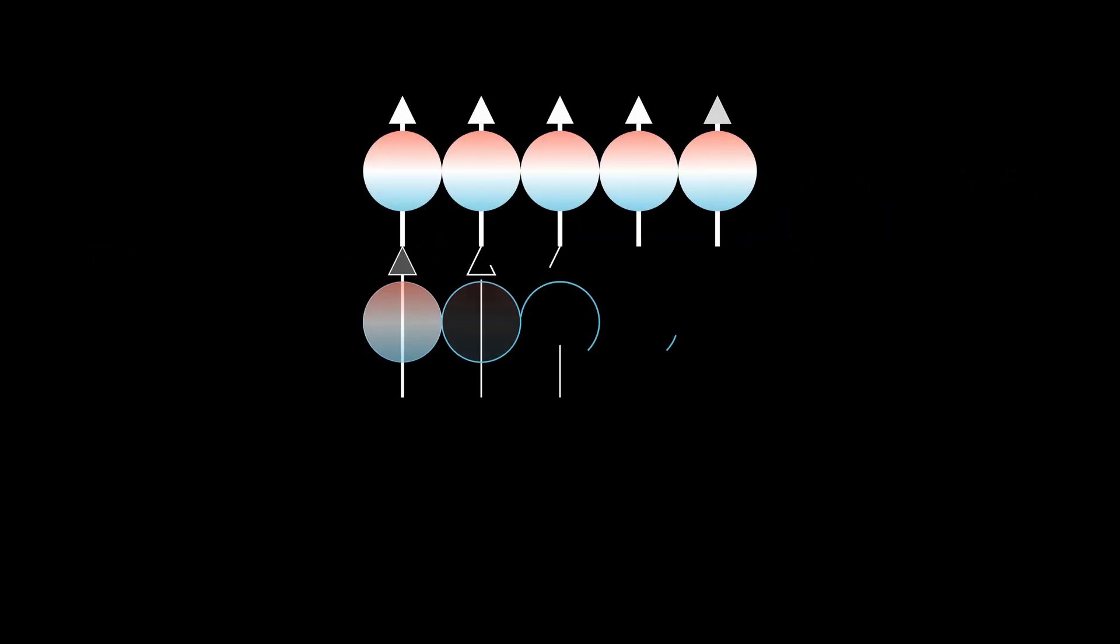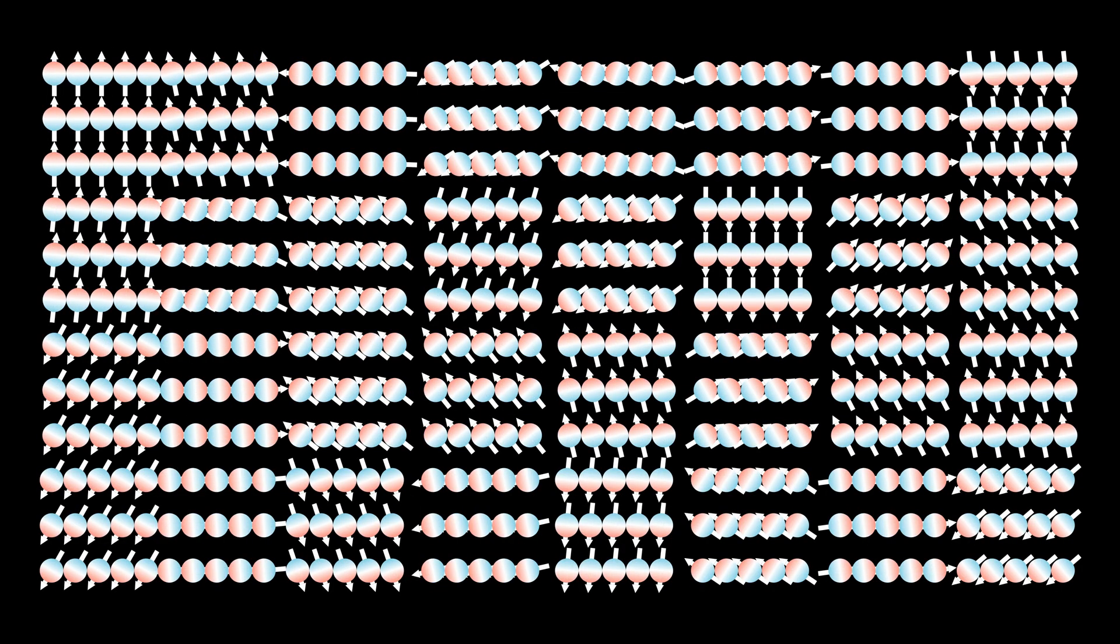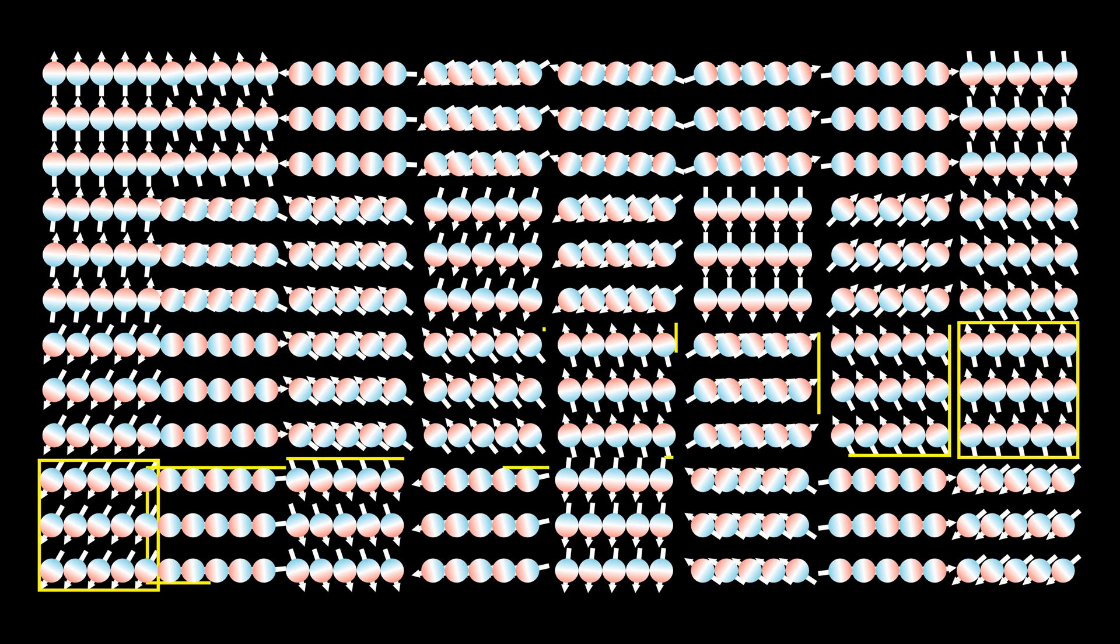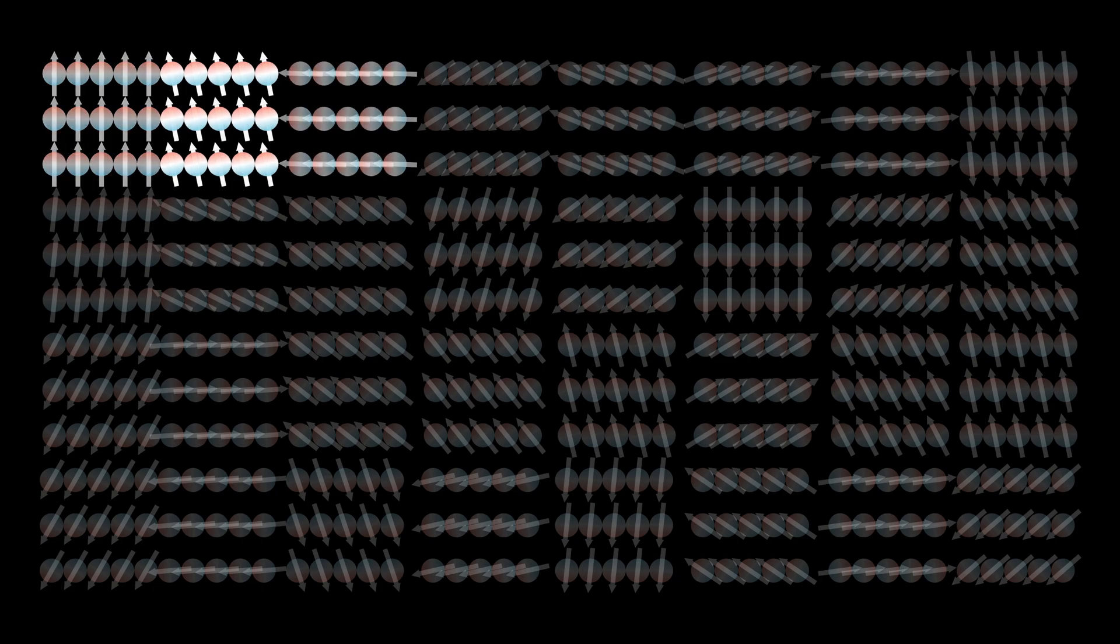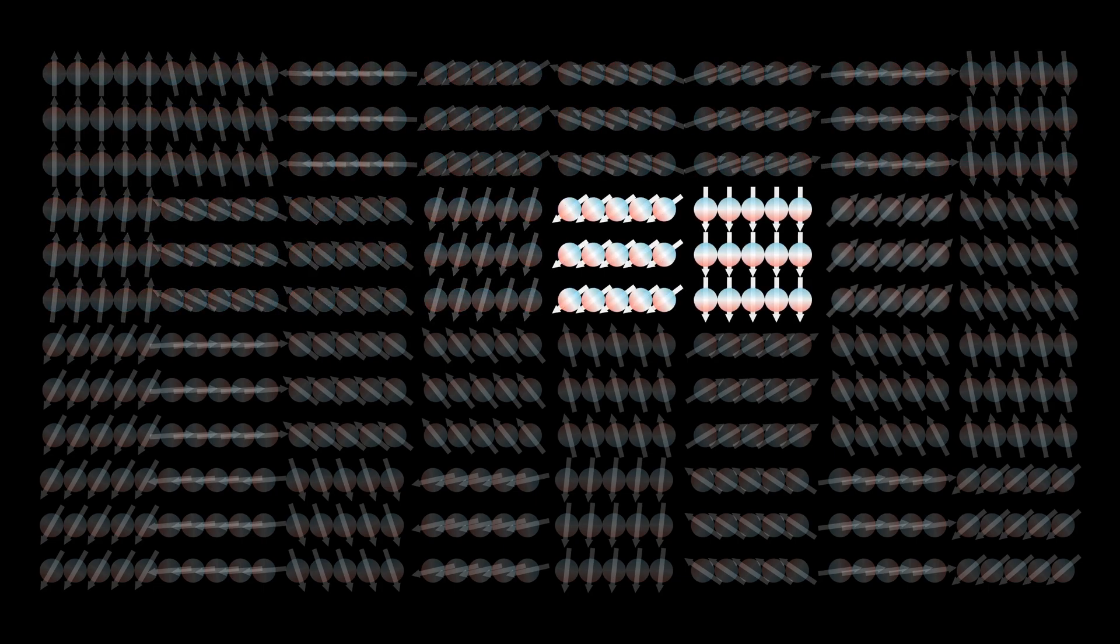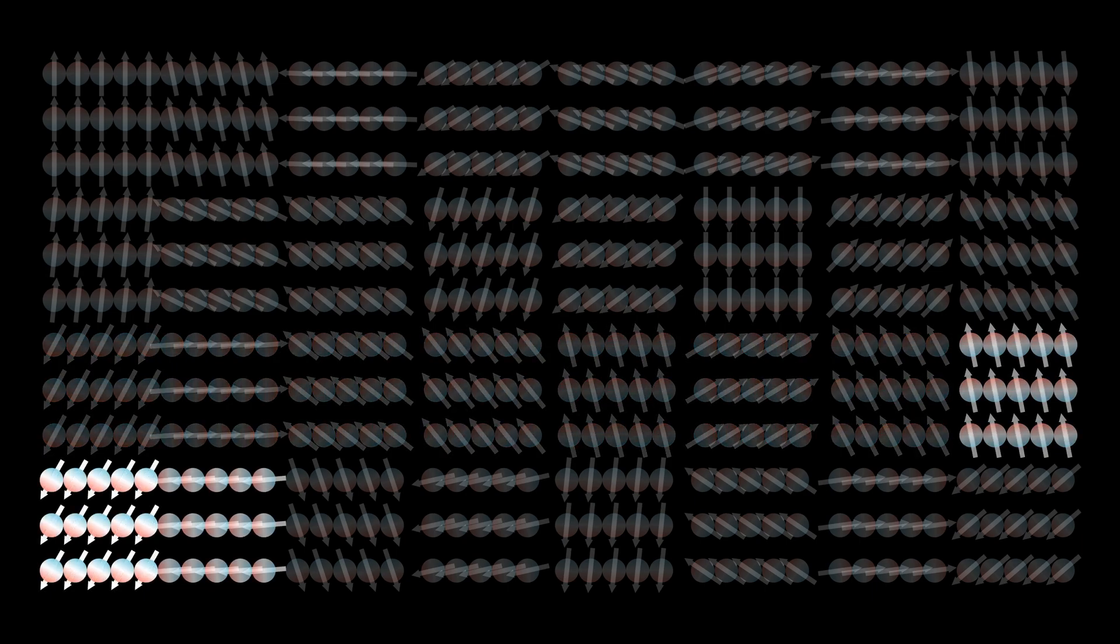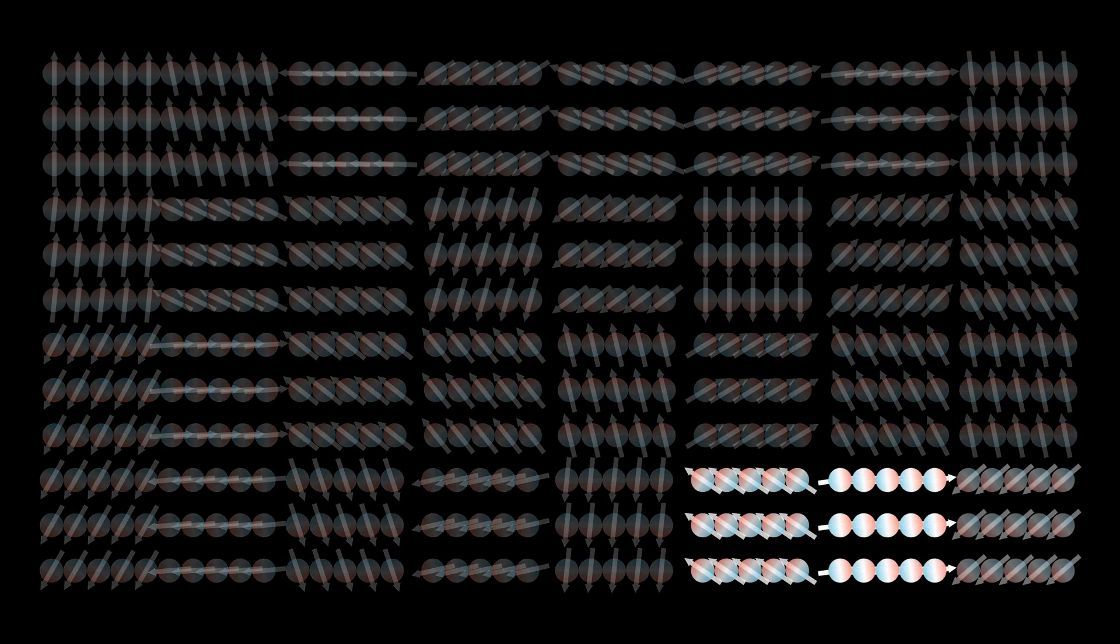Even in a ferromagnetic material like iron, the magnetic fields don't align perfectly across the whole object. Instead, the material is divided into tiny regions called magnetic domains, where all the atoms are aligned. Each domain is like a tiny magnet, but in a regular piece of iron, these domains point in random directions, and their magnetic fields cancel each other out.